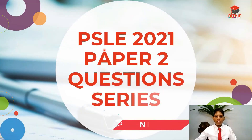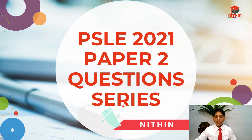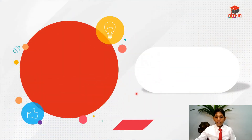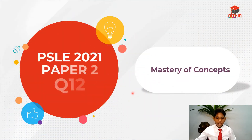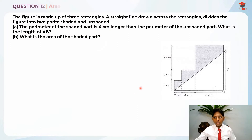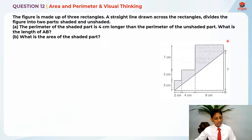Hi everyone, I'm Nitin and welcome back to PSLE Math 2021 Paper 2 Question Series. Today I'll be going through question 12. This question is actually a pretty difficult question for most students and today I'll be teaching how to solve it. This question is testing us on area, perimeter, and visual thinking.